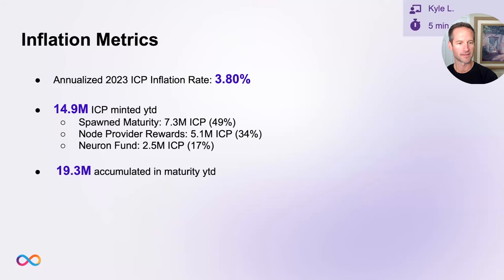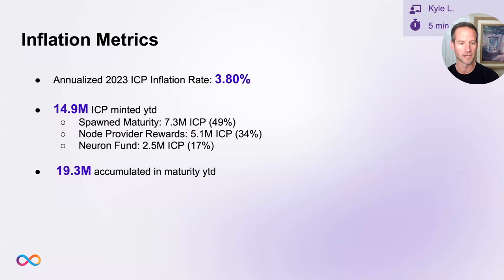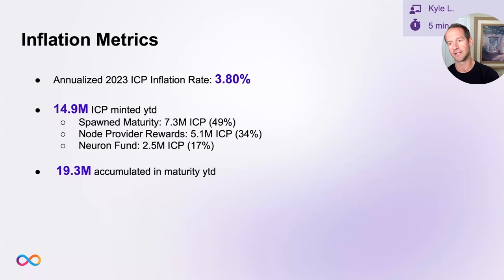There's been almost 15 million ICP minted already in 2023. When you break it down to figure out what's causing the inflation, almost 50% of that is spawned maturity — that's voting rewards that people are spawning into ICP. We've also seen about a third of our inflation caused by node provider rewards, and 17% has been caused by the Neuron Fund — taking maturity and using it in an SNS swap. There's been 2.5 million ICP used in that way.